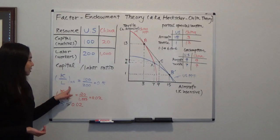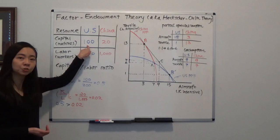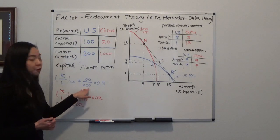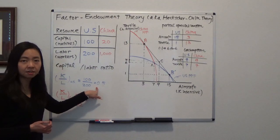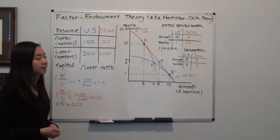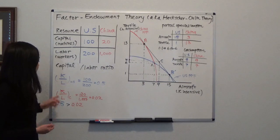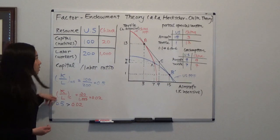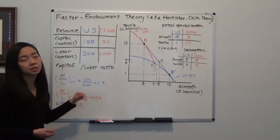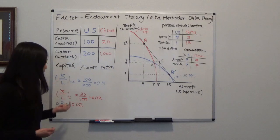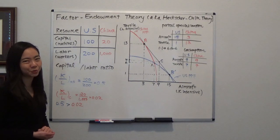In the United States, the capital-labor ratio is the number of machines, 100, divided by the number of workers, which is 200, and you get 0.5, meaning on average each worker has about half a machine to work with. For China, the capital-labor ratio is 20 divided by 1,000, and that gives you 0.02, meaning on average one worker has about 0.02 machines to work with.